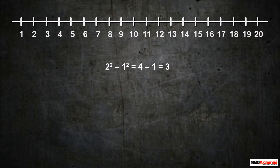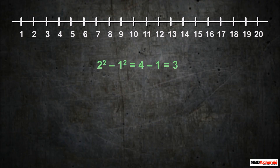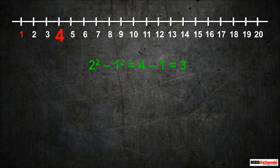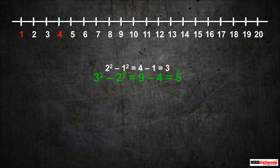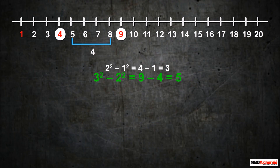Find the difference of the square of 1 and the square of 2 — that is 3. Now, count the non-square numbers between the square of 1 and the square of 2. There are two non-square numbers. Find the difference of the square of 2 and the square of 3 — that is 5. Now, count the non-square numbers between the square of 2 and the square of 3. There are four non-square numbers.